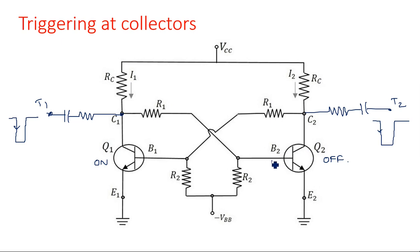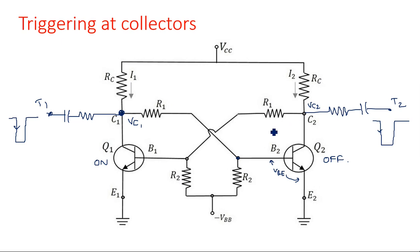Cutoff means the potential VBE is not sufficient to bring the transistor into the active or saturation region. This voltage comes through R1 from the collector C1. If VC1 is low, the transistor comes into off state, and similarly if VC2 is low. But currently Q1 is in saturation and Q2 is in cutoff. This state is fixed until we give a triggering pulse.